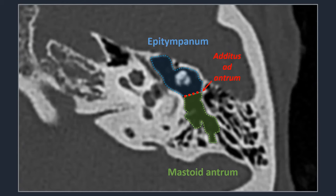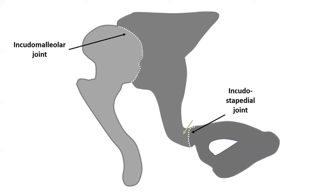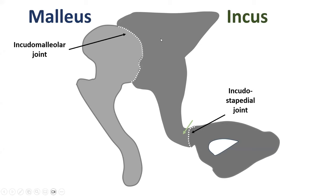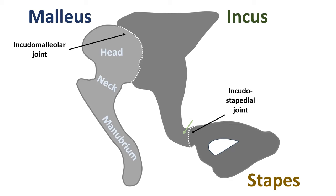The ossicles consist of the malleus (the hammer), which articulates with the incus (the anvil) through the incudomalleolar joint, and the stapes, which articulates with the incus through the incudostapedial joint. The malleus has a head, a small neck, and a large handle called the manubrium or manubrium. It also has a short anterior process and a lateral process, which attaches to the eardrum.